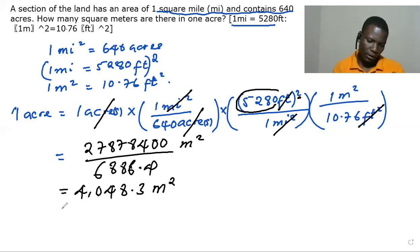So this is the answer. These are the square meters that are found in one acre. This is how we calculate it. Thank you for watching. See you in the next video.